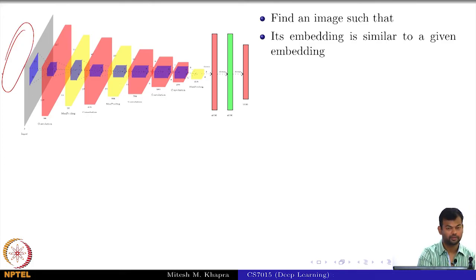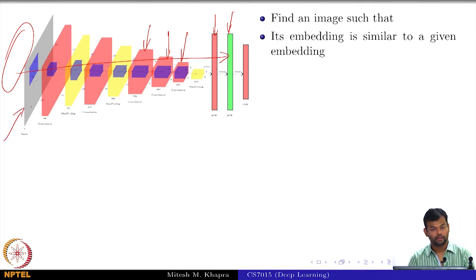Suppose I take a monkey image and pass it through all these layers and compute all these embeddings. Now, again I start with a blank image and my optimization problem is such that for this blank image I want to modify it. This blank image is my parameter matrix and I want to modify it such that the embedding that it produces should be similar to the embeddings that the monkey image produced.